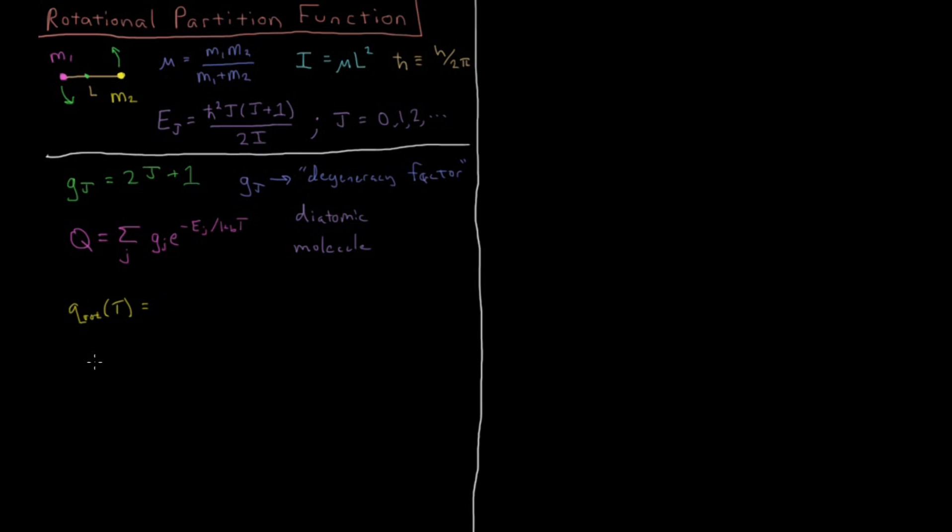It's going to depend on temperature for its rotational partition function. That's a sum of all of our Boltzmann factors, from j equals 0 up to infinity. Then we have our degeneracy factor of 2j plus 1 times our Boltzmann factor, e to the minus beta, remember 1 over kbt, times the energy level, and the energy level is h-bar squared j times j plus 1 over 2 times the moment of inertia, this reduced mass times bond length squared.